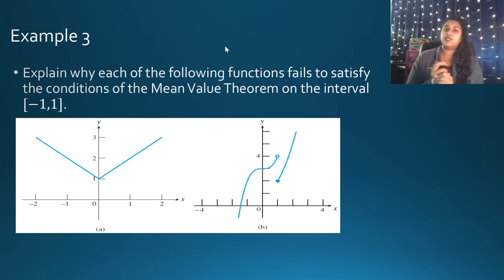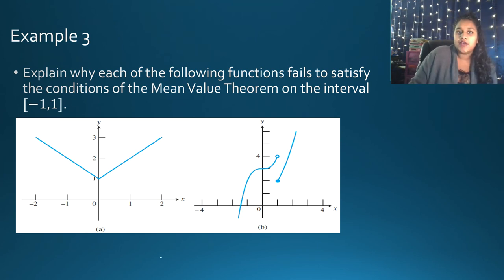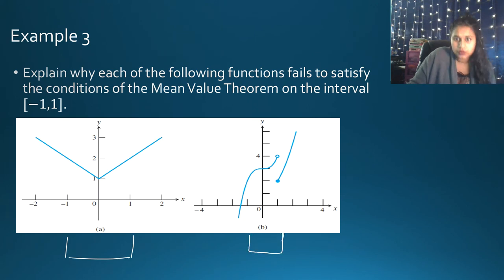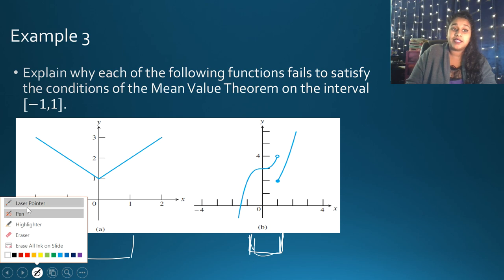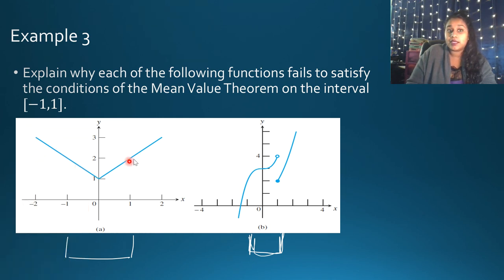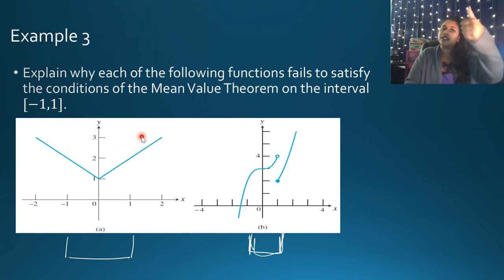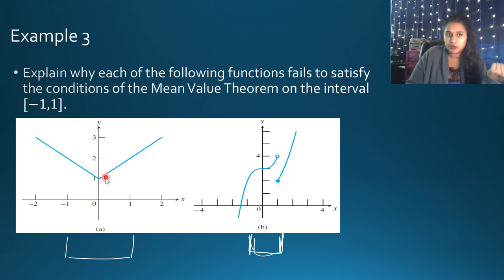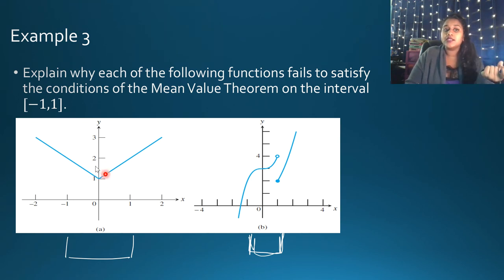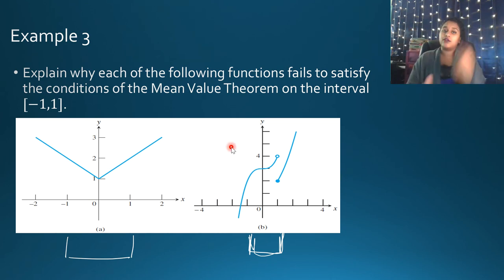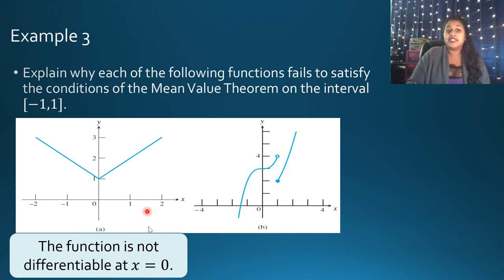Now, why would these functions fail to satisfy the conditions of the MVT on the interval from -1 to 1? Looking at graph A on the left: it is definitely continuous — you can draw that line without picking up your pen. So it meets the first condition. But is it differentiable? We can't assume continuity means differentiability. There is a corner at that point, which is one of the three non-differentiable cases — the others being a cusp and a vertical tangent. So graph A is not differentiable at X = 0.